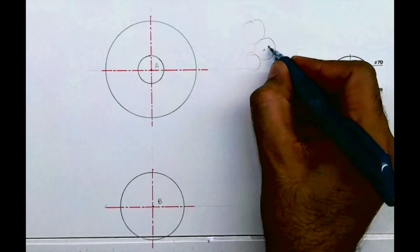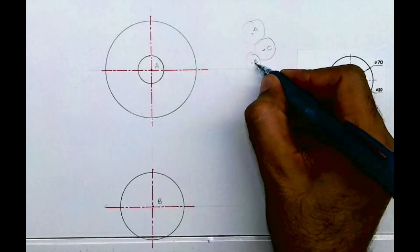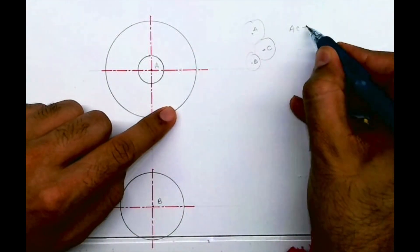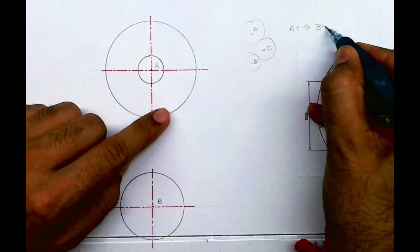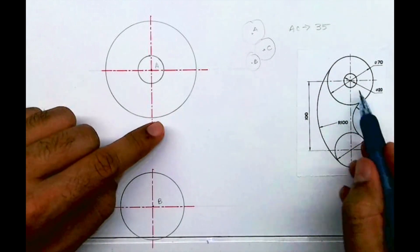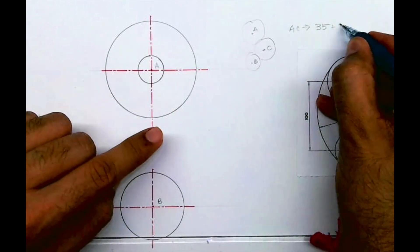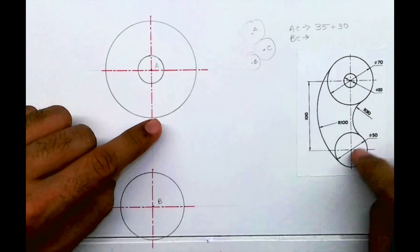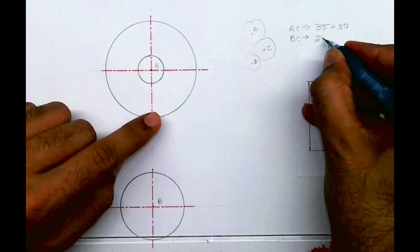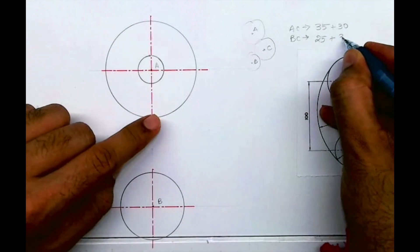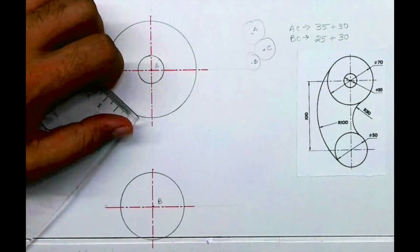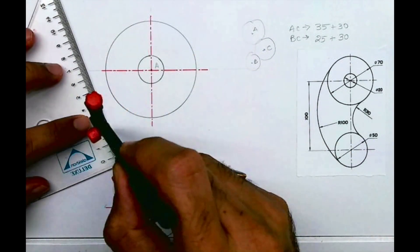This is point C, this is point A, this is point B. Distance from A to C would be 35 plus 30. Distance from B to C would be 25 plus radius 30. So we'll cut from A to C at 65, and from B to C we will cut 55.